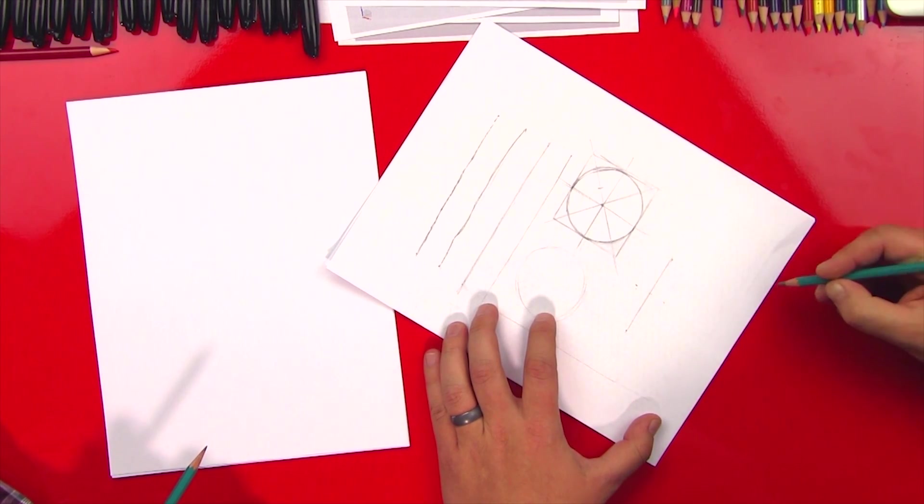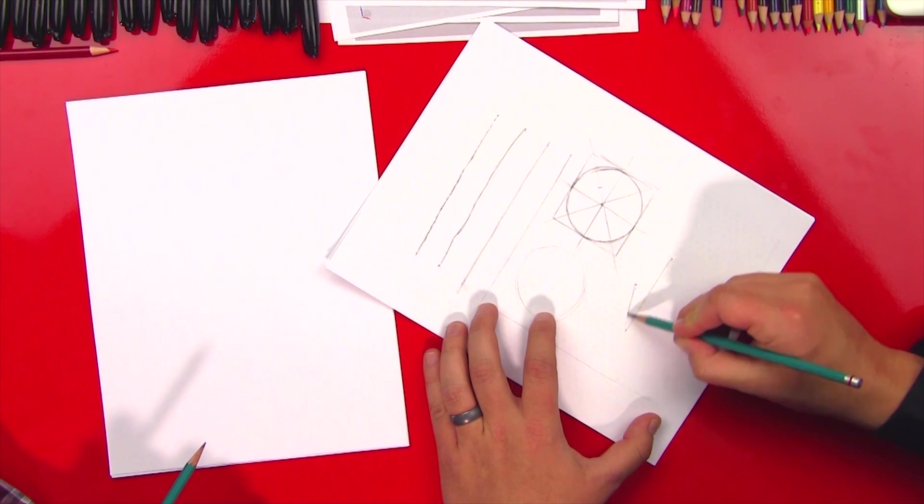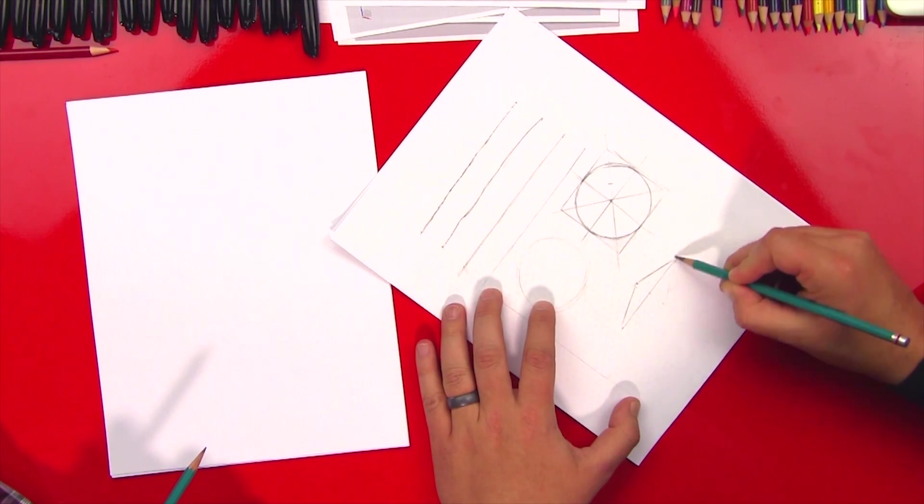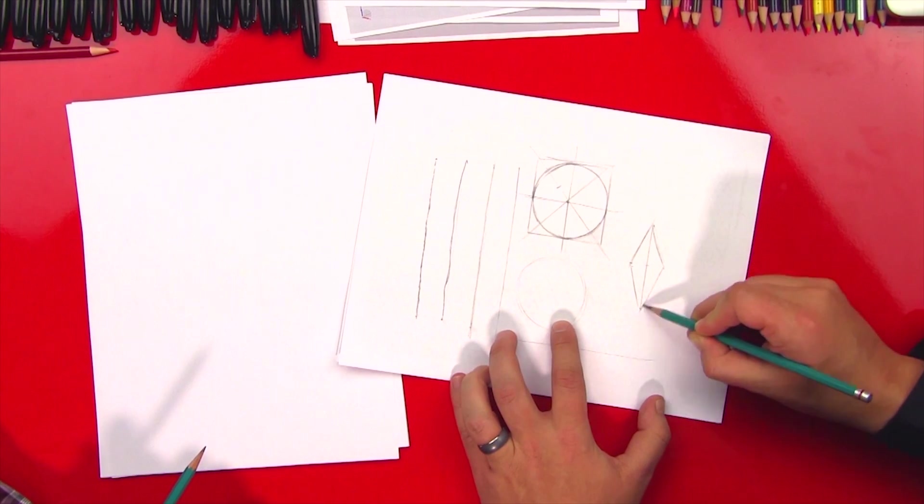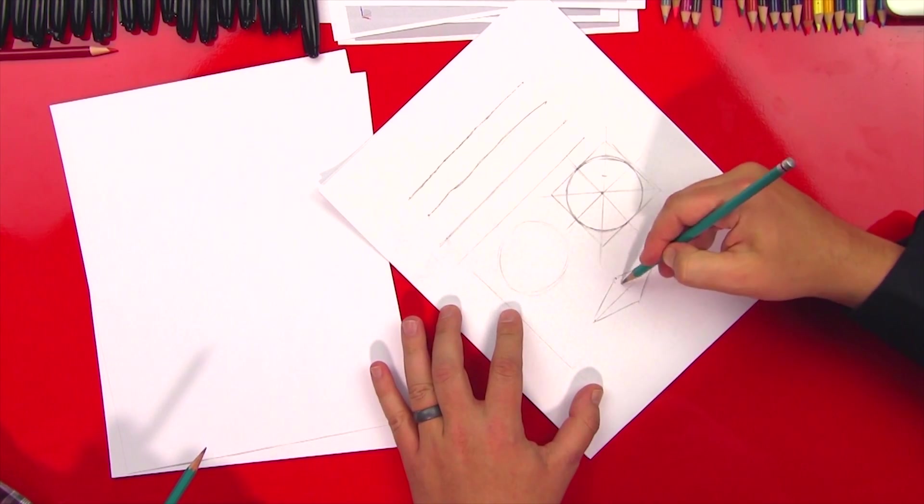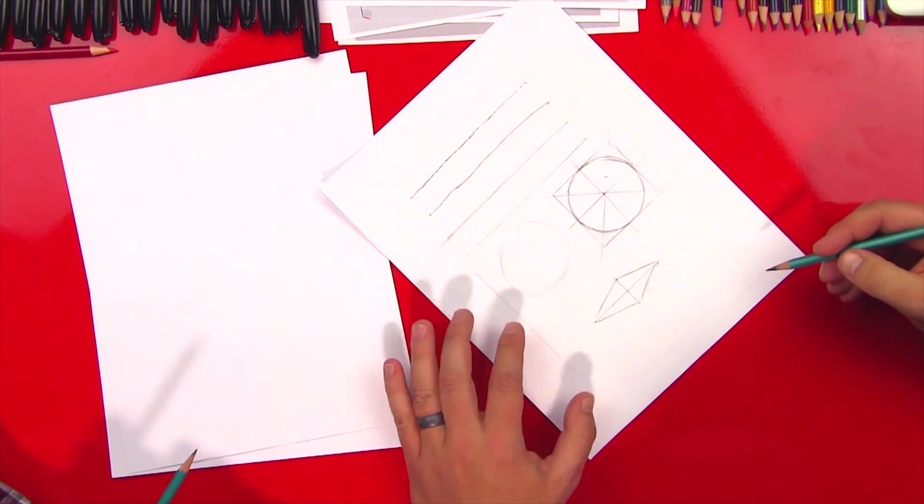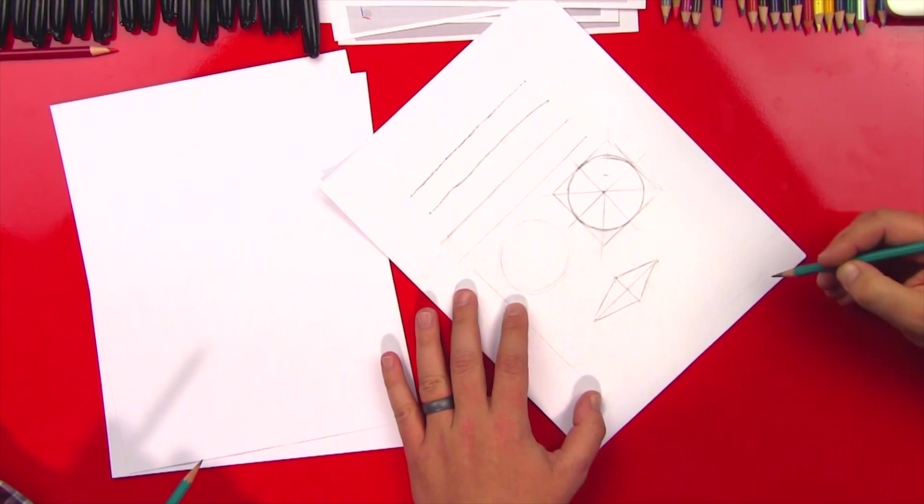And then I'll put two points above those. And this is going to give me a foreshortened square or a square on its side. I don't know if that's how you would do it as an engineer, but that's how I do it as an artist. That's pretty good.